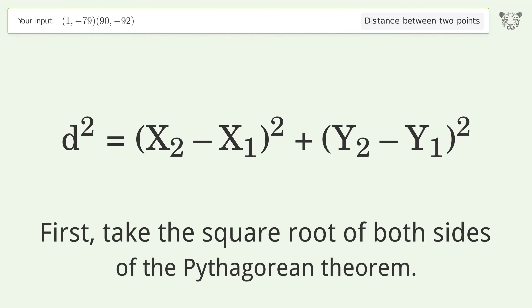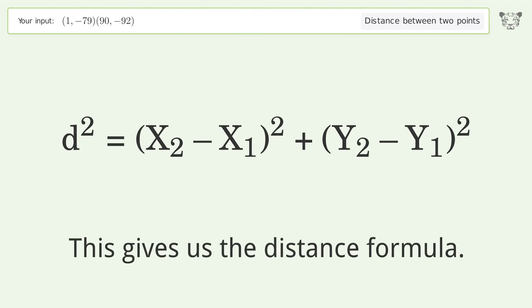First, take the square root of both sides of the Pythagorean theorem. This gives us the distance formula.